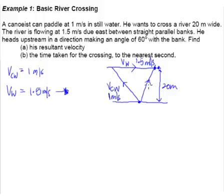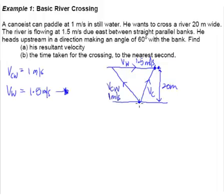That leaves us with V_C — the actual path of your canoe. If you aim your canoe this way and there's a strong current flowing downwards, you will end up somewhere here. It's a very simple concept to grasp.